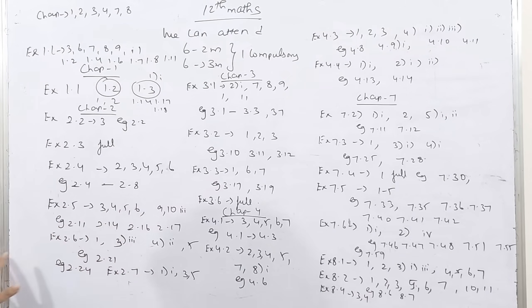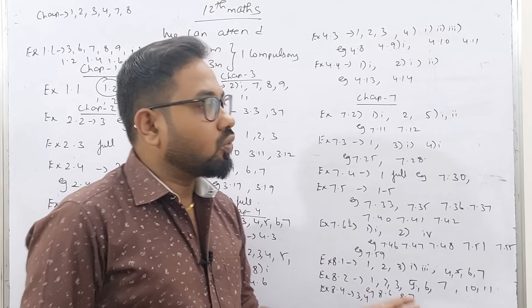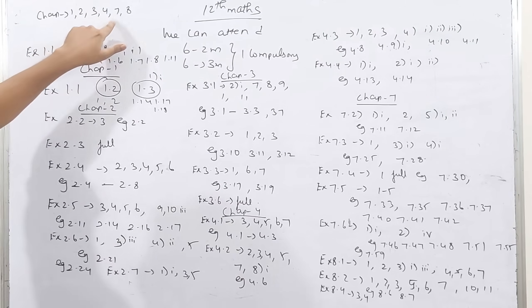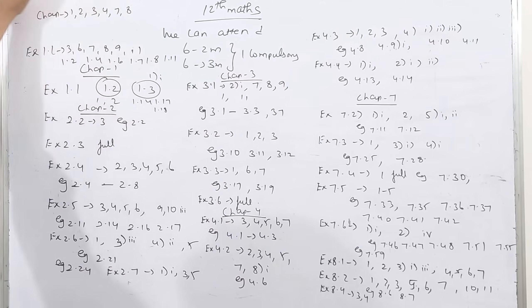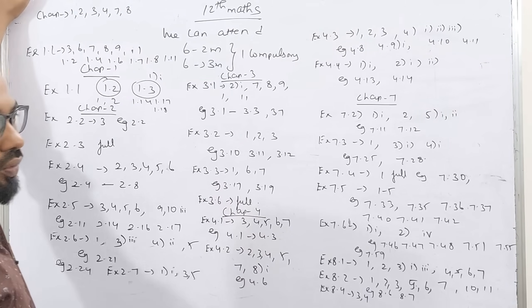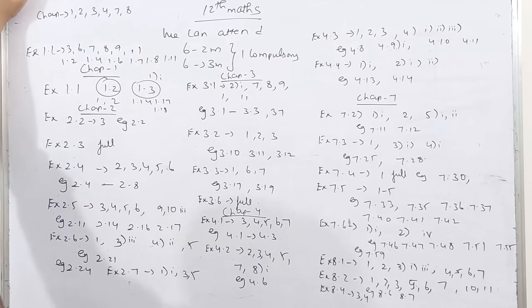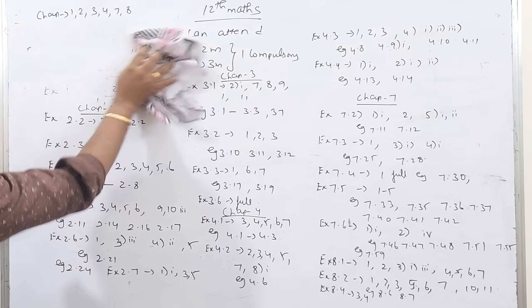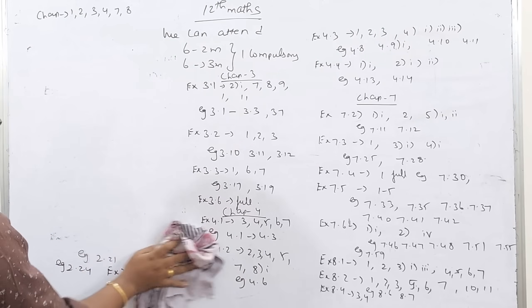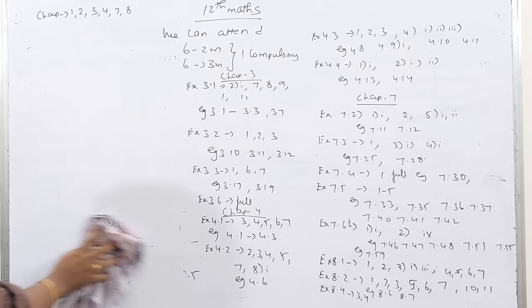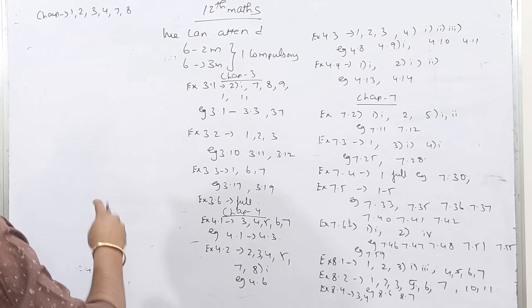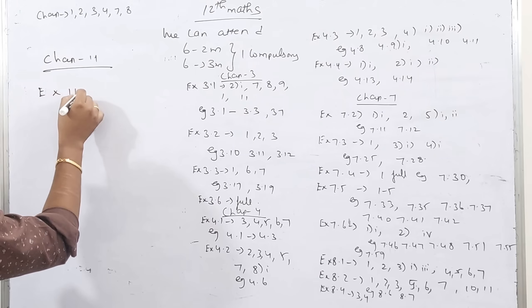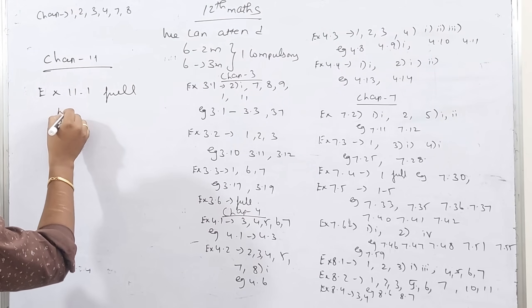If you look at all these things, how do you think about this? I'm going to give you two-mark, three-mark. I'm going to give you one chapter: 1, 2, 3, 4, 7, 8 — I'm going to give you two-mark, three-mark. If you look at all these things, you can have one option. It's easy to give one chapter. This will be very easy — it will be 4x.